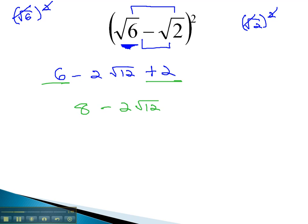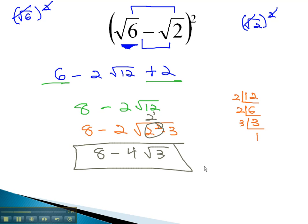We also want to simplify that root 12. The prime factorization of 12 can be quickly calculated to be 2 squared times 3. 8 minus 2 root 2 squared times 3, and then we can take the 2 squared out as a 2 to the first power. We now have 8 minus 4 square root of 3 for our final answer.